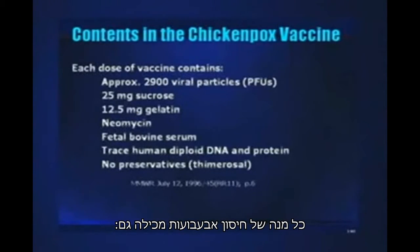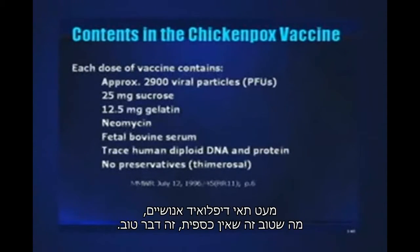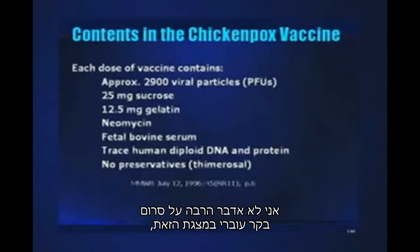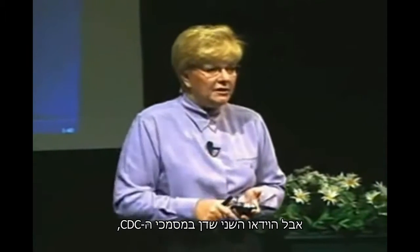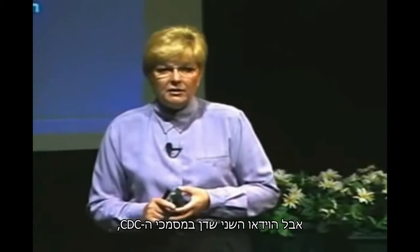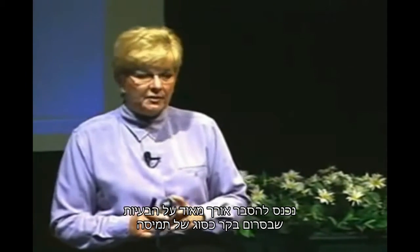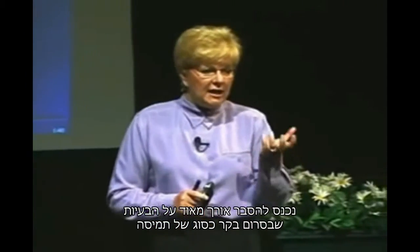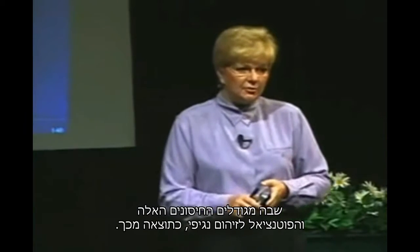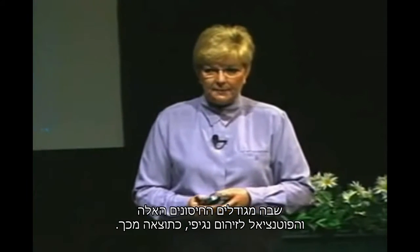Each dose of the chicken pox vaccine contains table sugar, gelatin, neomycin, fetal bovine serum, and a small amount of human diploid DNA. The good news is it has no thimerosal. The fetal bovine serum is discussed at length in another video regarding the CDC document, covering potential viral contaminants from that growth medium.